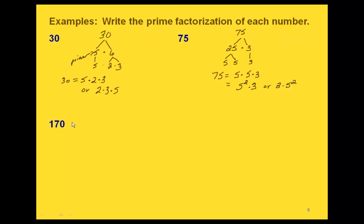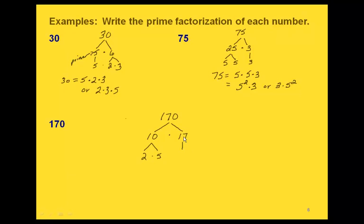Finally, let's do 170. Since it has a zero on the end, we know it's divisible by 10. So right away, 10 is a factor, and we can write this as 10 times 17. 10 is composite, since we can write it as 2 times 5. 17 is prime — the only factors of 17 are 1 and 17. So we carry that down, and our prime factorization of 170 is 2 times 5 times 17.